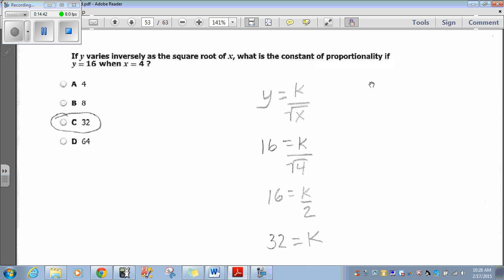Then, it says if y is 16, replace y with 16, x is 4. So, we have 16 equals k over the square root of 4, which is just 2. 16 equals k over 2. And then, to find out k, I multiply both sides by 2, 32. It's actually rather simple when you know the inverse formula. Choice C, 32.